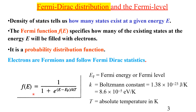The Fermi-Dirac distribution function is F(E) = 1 / (1 + e^((E − E_F) / kT)). This function depends on temperature. E_F is the Fermi energy or Fermi level, k is the Boltzmann constant, and T is temperature in Kelvin.